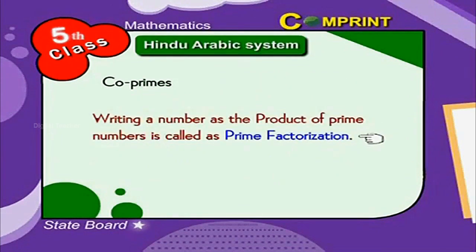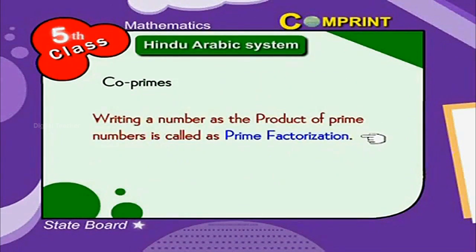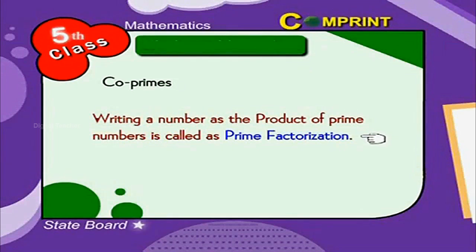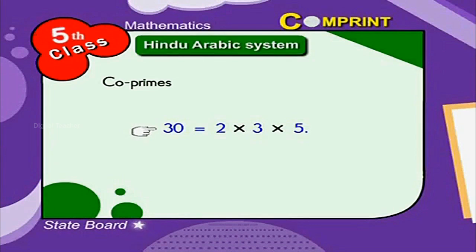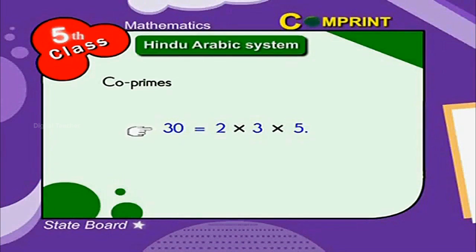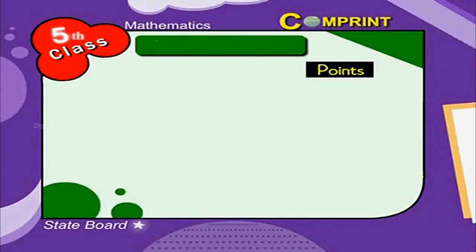Writing a number as the product of prime numbers is called prime factorization. For example, 30 = 2 × 3 × 5.